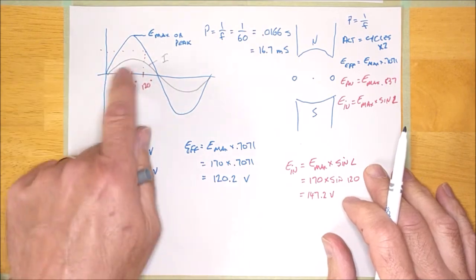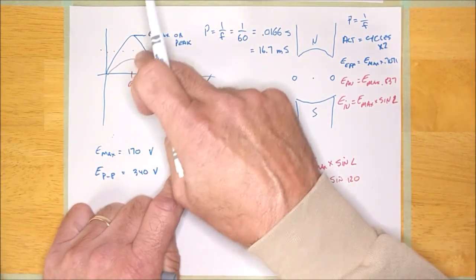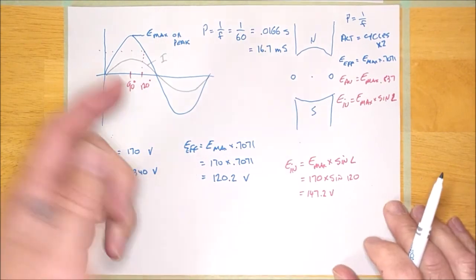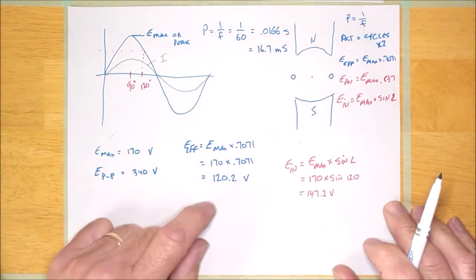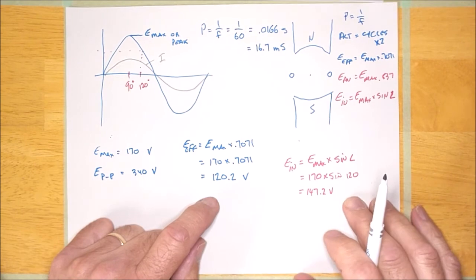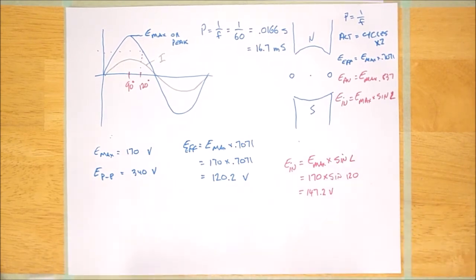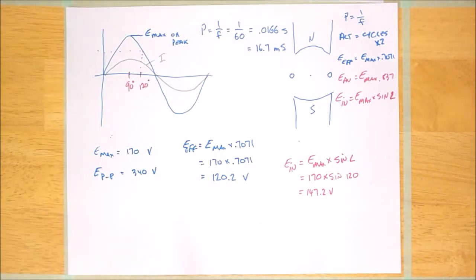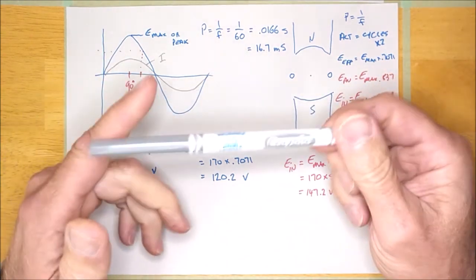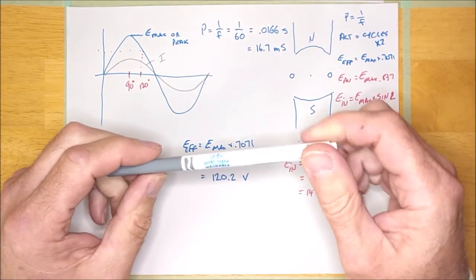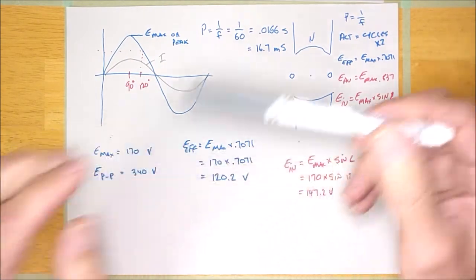Just wanted to make that clear because some homework questions are probably going to refer to currents — just know that current follows all the same rules as voltage when it comes to the sine wave. That's all we're going to do for right now. The homework I'm assigning is Unit 1, Handout 2, which gets you to calculate max, instantaneous, average, and effective values on both voltage and current sine waves. Maybe next week we'll take a few of those up. Have a good one guys, see ya.